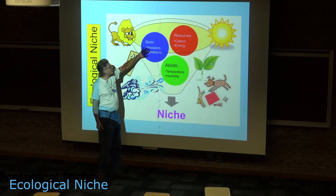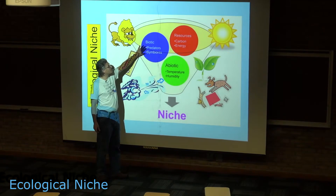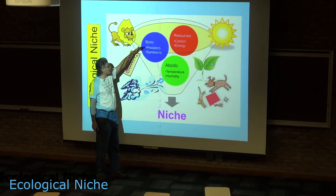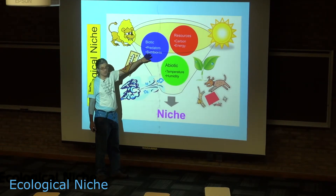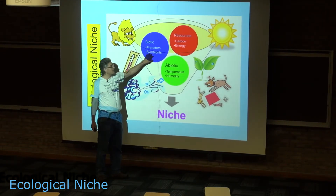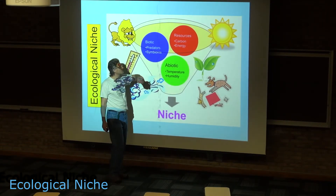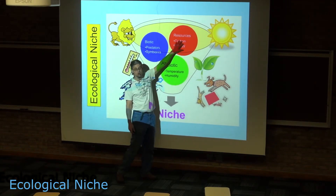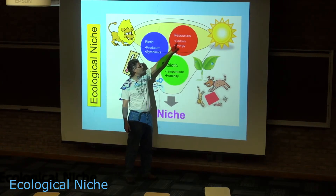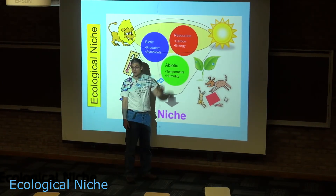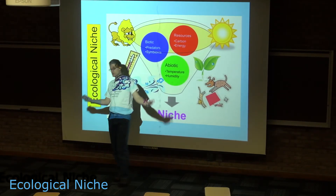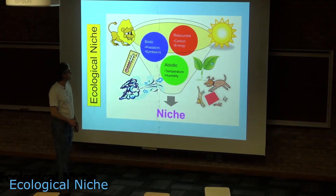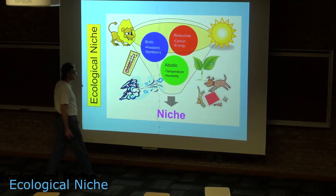So there are biotic components of the environment. These are predators, but also could be organisms that live in association with an organism's body. There are resources — the big ones are carbon and energy, but it could also be a place to nest. There are many different resources.